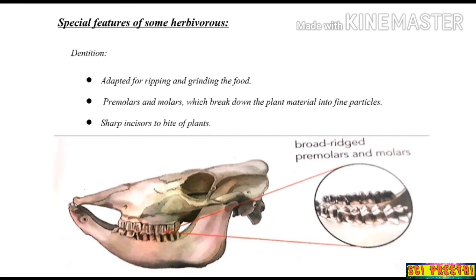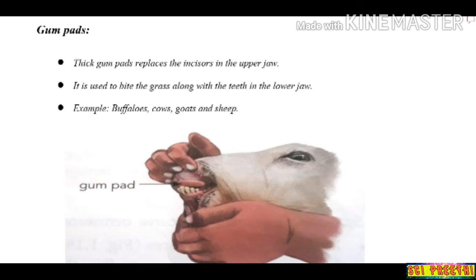The next feature is the gum pad. Some animals like cows, buffaloes, goats, and sheep have a very thick gum pad on the upper portion of their mouth. This gum pad replaces the incisors in the upper jaw. Because they don't have teeth in the upper position, they wrap their tongues around the grass and use their gum pad along with the teeth in the lower jaw to bite the grass.